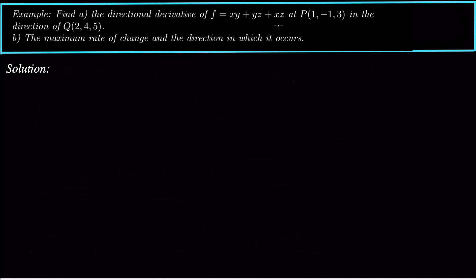We want to find the directional derivative at this point in the direction of another point. So we're at the point (1, -1, 3) and we want to find the directional derivative in the direction from that point towards the point (2, 4, 5).